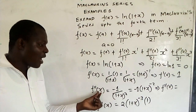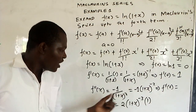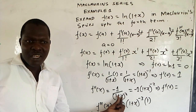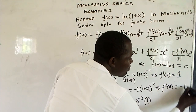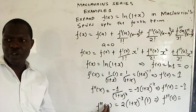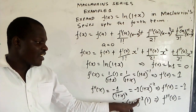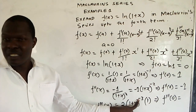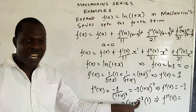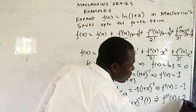We want f''(0). Putting 0 into f''(x) = negative 1 over (1 + x) squared gives negative 1 over (1 + 0) squared = negative 1 over 1 squared, which is just negative 1. Then f'''(0): putting 0 into f'''(x) = 2 over (1 + x) cubed gives 2 over 1 raised to negative 3, and 1 raised to anything is just 1. So f'''(0) = 2.